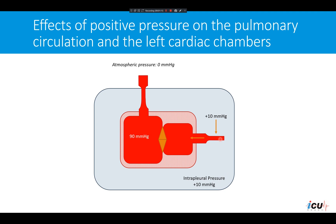It will take two to three heartbeats before this effect is seen on the left side. The second effect is the transmural pressure. We are assuming an intraventricular pressure of 90 mmHg. With an intrathoracic pressure of 10 mmHg, the transmural pressure will be 90 minus 10, giving us a lower transmural pressure than if intrathoracic pressure was zero. That is decreased tension on the left ventricle, or in other words, decreased afterload.